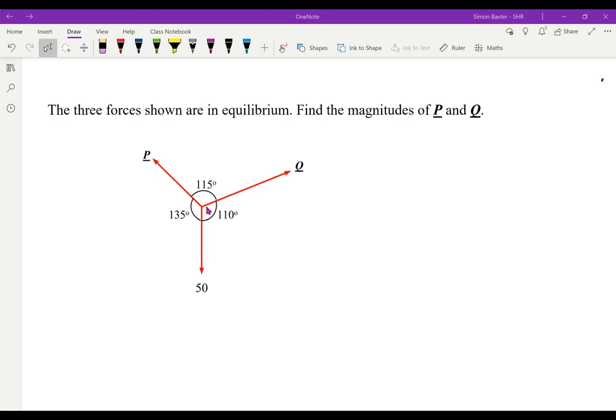Yes, we could use what we did in M1. We could resolve Q in that direction and vertically. We could resolve P in that direction and vertically. We could balance out the horizontal components, balance out the vertical components, and we would have simultaneous equations for P and Q. Fine, we could do that. But there are three forces, they're in equilibrium, so their vector sum is zero.